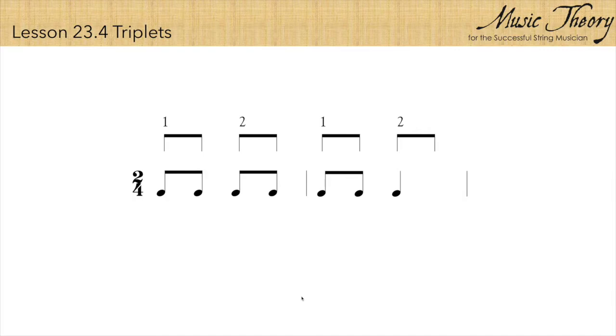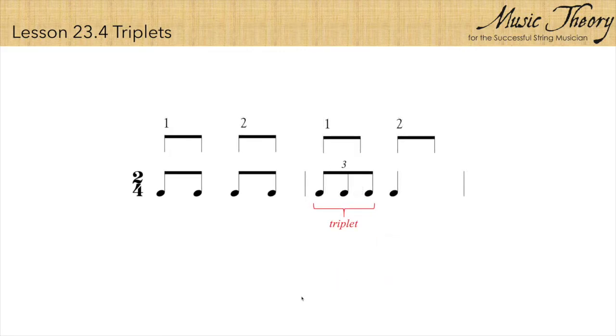But what if we wanted to put three notes in the space of one beat? We can do that with something called a triplet. In a triplet, we write three evenly spaced notes where two would normally go.